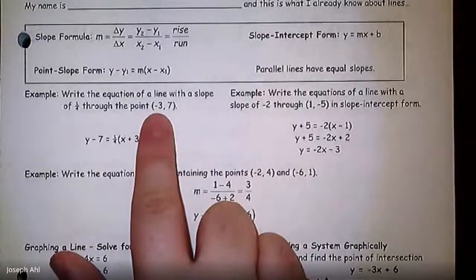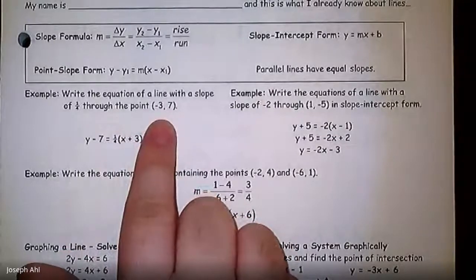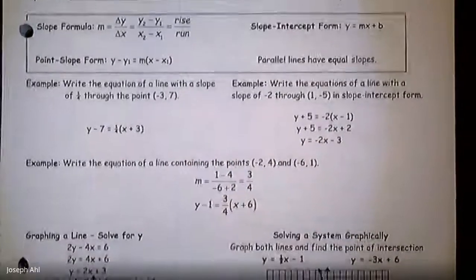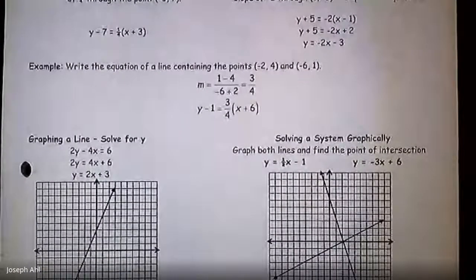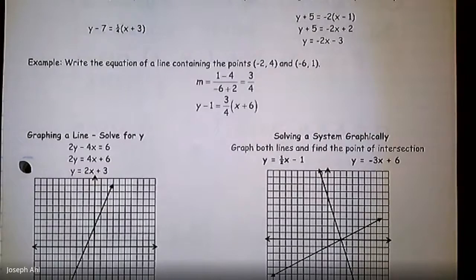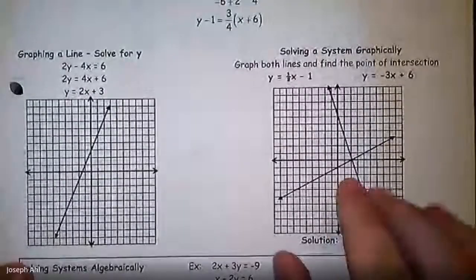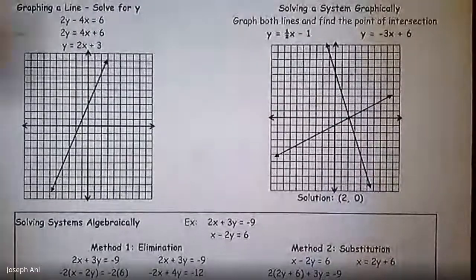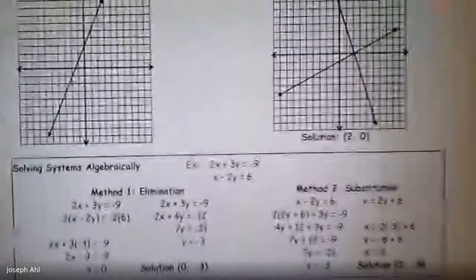I've given you some filled-in examples of how to write the equation of a line given a point and a slope — we can do that in slope-intercept form. If I gave you two points, we should be able to write the line that contains those two points. Here are some quick examples of graphing lines and finding a solution to a system of equations graphically, calculating the point of intersection. Then there are two ways algebraically to solve systems.